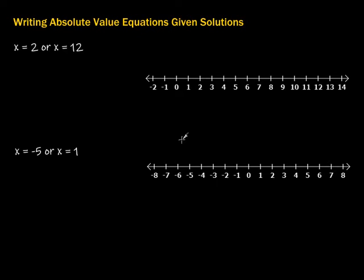In this video, we're going to take a look at writing absolute value equations when we're given solutions. The first thing is that this is all going to hinge on this right here. The form is going to be x minus the middle, and that's going to be equal to the distance from the middle. The absolute value of x minus the middle is going to be equal to the distance from the middle.